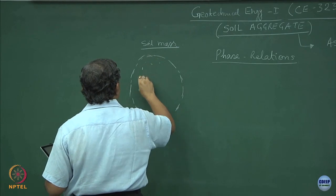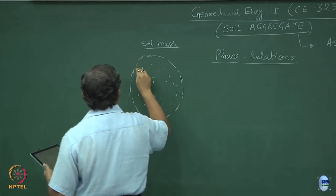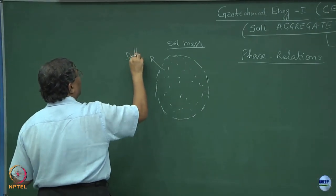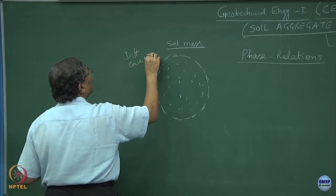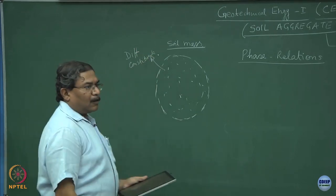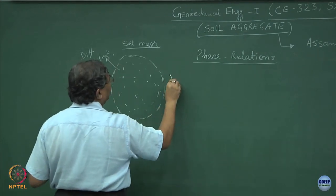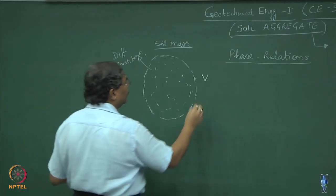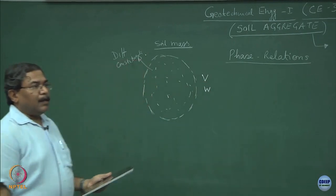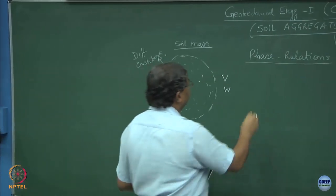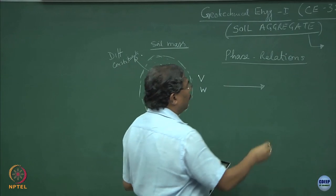This soil mass contains all the constituents which we have talked about. Suppose if this soil mass has the volume of V and weight W, this can be depicted as a system of 3 phases.